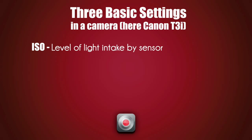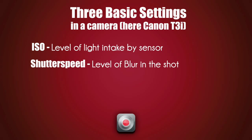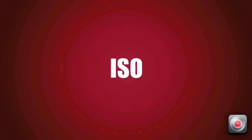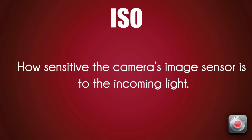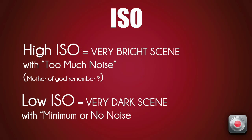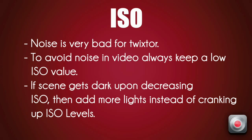So there are 3 basic things to learn. First: ISO. This decides how sensitive the camera sensor is to the incoming light. A higher ISO value like 1000 or 6000 — which is the highest in my camera — means more light, but it also means more noise, and noise is very bad for Twixtor. So keep the ISO as low as possible: 100, 200, or maximum 400.